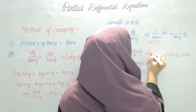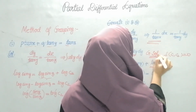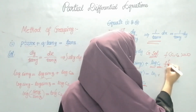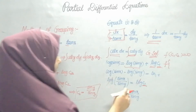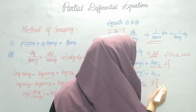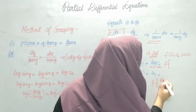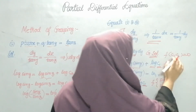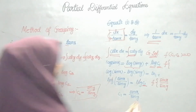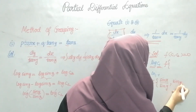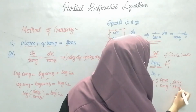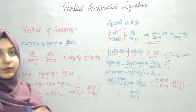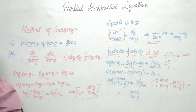I now have both C1 and C2. The general solution is F(C1, C2) = 0. Substituting: F(sin x / sin y, sin y / sin z) = 0. That is the answer. Simple and easy.